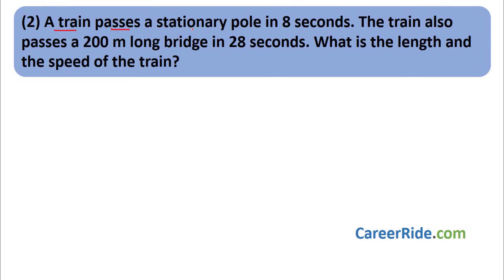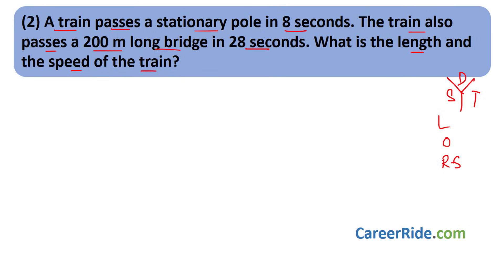Question number 2: A train passes a stationary pole in 8 seconds. The train also passes a 200-meter long bridge in 28 seconds. What is the length and the speed of the train? Since it is a speed, distance, time sum, we write DST. We must include the length of the train in distance travelled. Length of the pole must be taken as 0. No relative speed needed — only the train is moving; the pole and bridge are stationary.